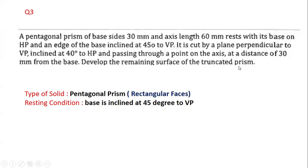Develop the remaining surface of the truncated prism. The type of solid is a pentagonal prism. For a prism, when we cut and unfold it, we are going to see rectangular faces. For a pyramid we see triangular faces; for a prism we see rectangular faces. To construct the top view we need the resting condition.